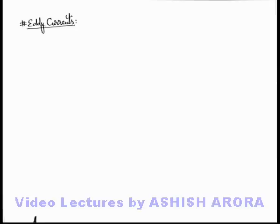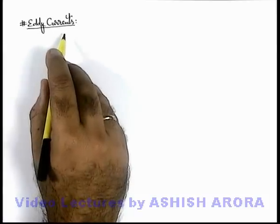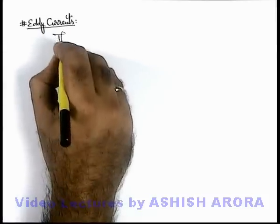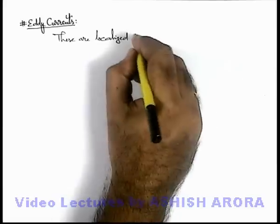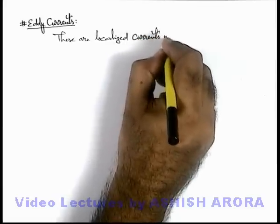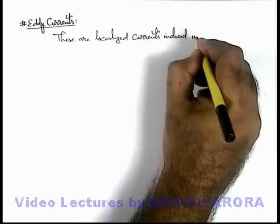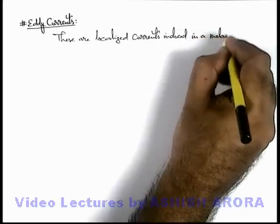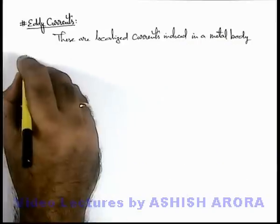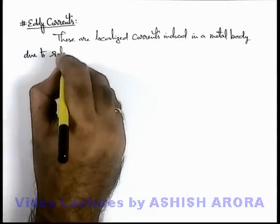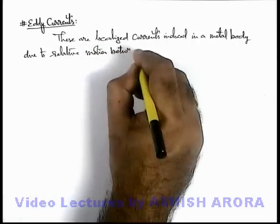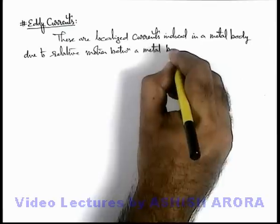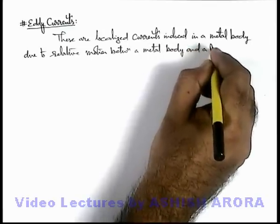Let us study a very important phenomenon in time-varying magnetic fields which we call eddy currents. About eddy currents, we can write down that these are localized currents induced in a metal body due to relative motion between a metal body and a magnetic field.